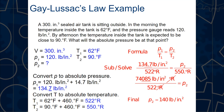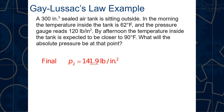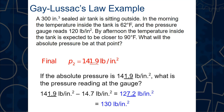The final absolute pressure is 141.9 psi. If the question asked for gauge pressure, subtract 14.7 to get 127.2 psi. So we really went from 120 psi to about 127 psi gauge pressure just by the temperature changing from 62°F to 90°F.